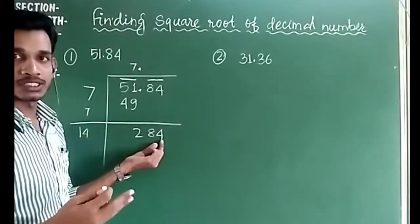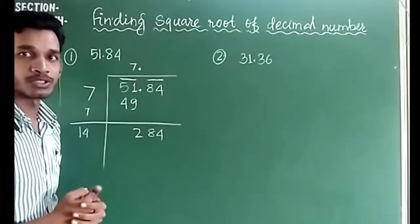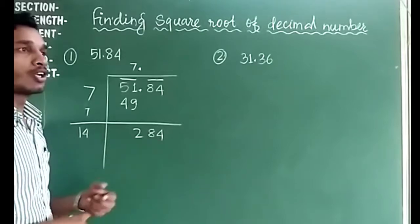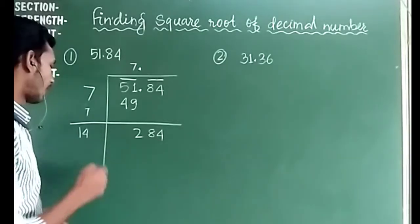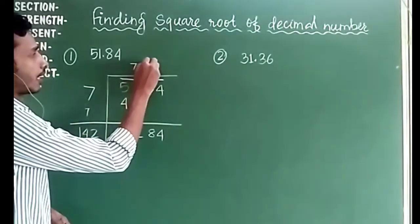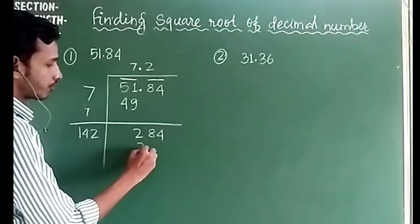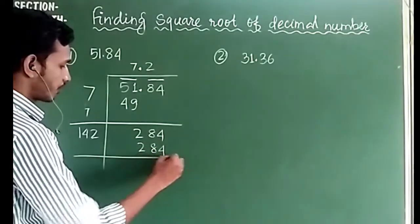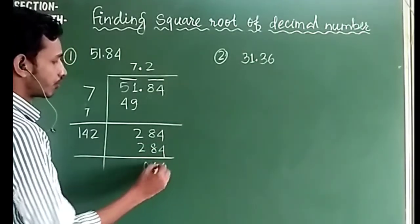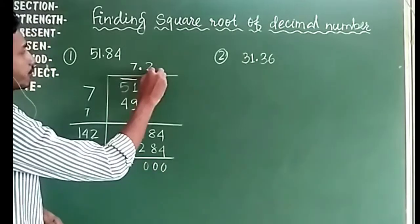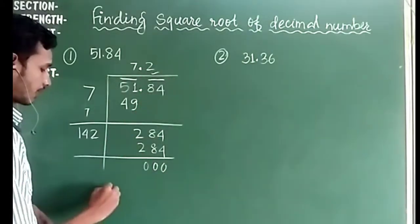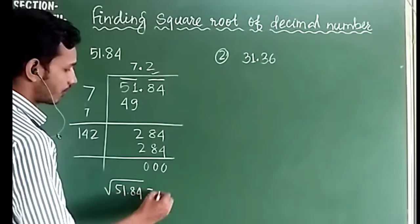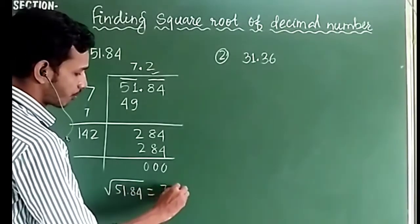Now we have 14 and we write the same digit here. The unit digit 4 tells us the digit is 2, since 2 squared ends in 4. So we write 2, giving us 142×2 = 284, remainder 0. The answer for √51.84 is 7.2.